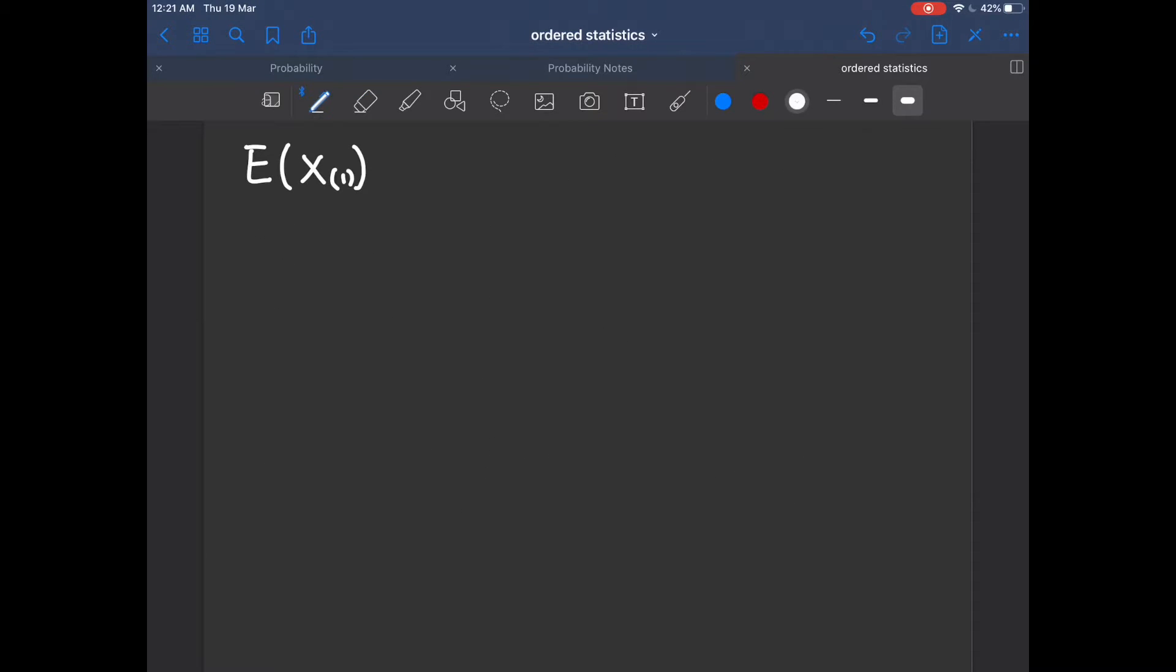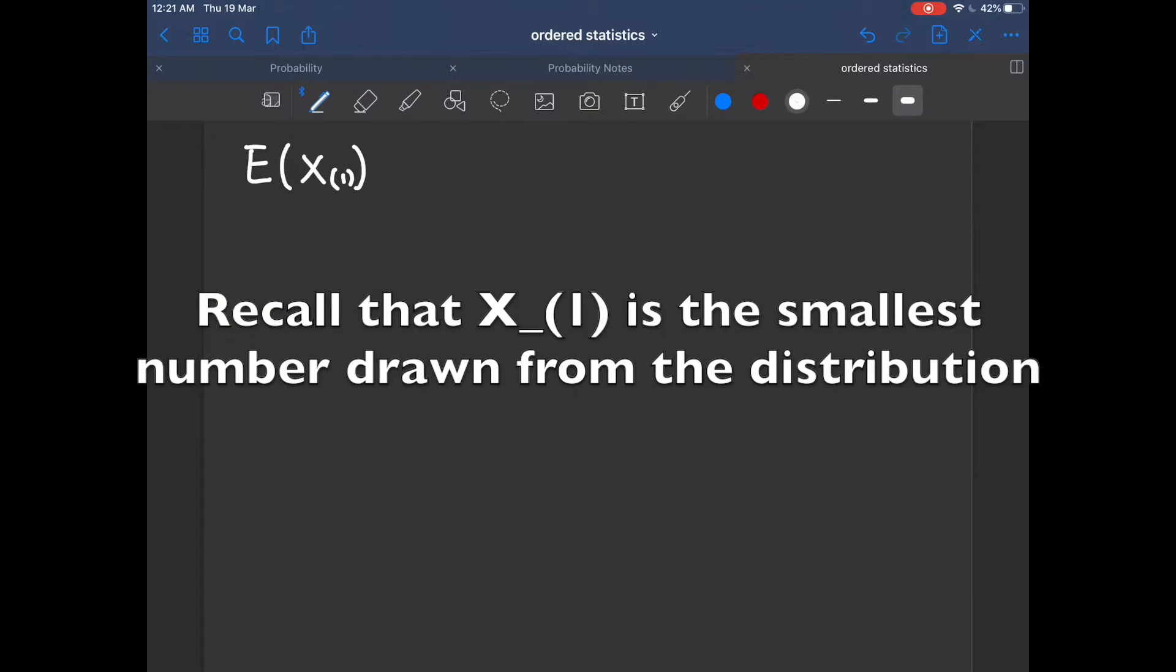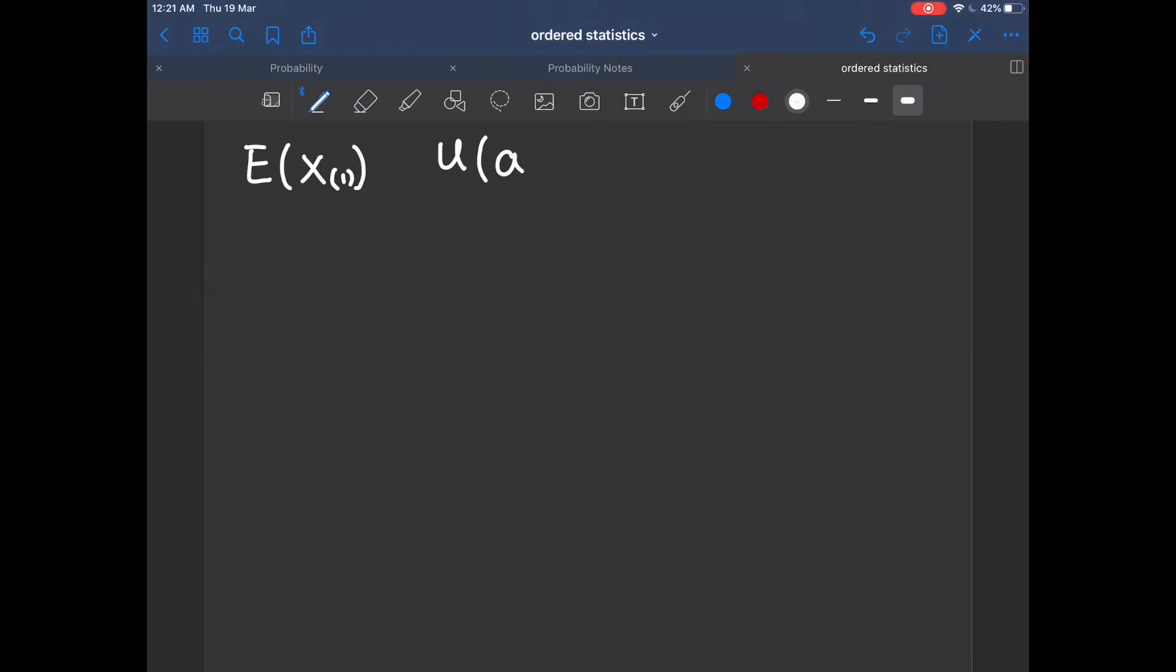So now let's move on to the expectation of X1. And now we relax the assumption of the uniform distribution with a minimum being a and a maximum being b. So this is more general than a standard uniform case. Well, so let's still find the CDF of X1.